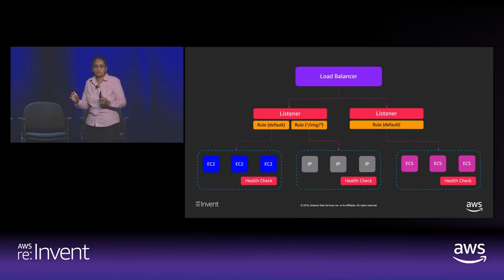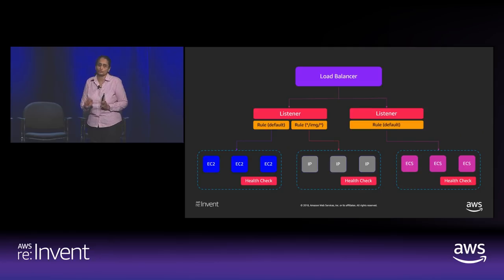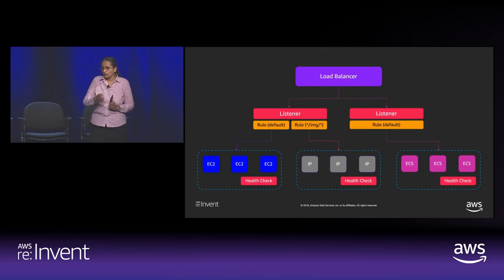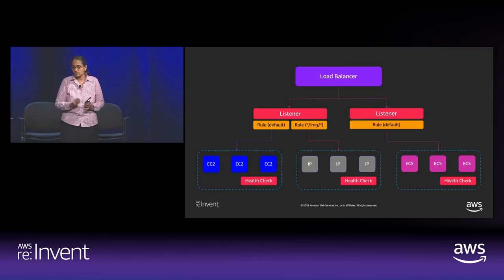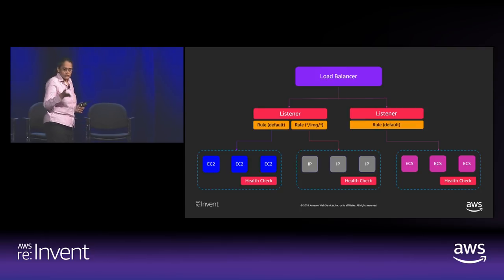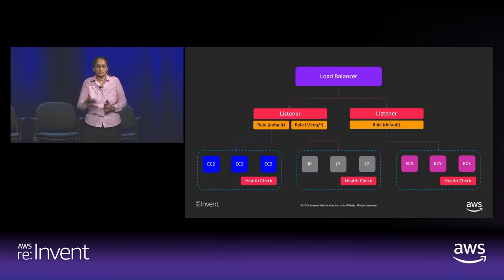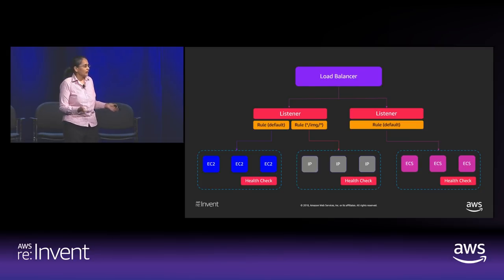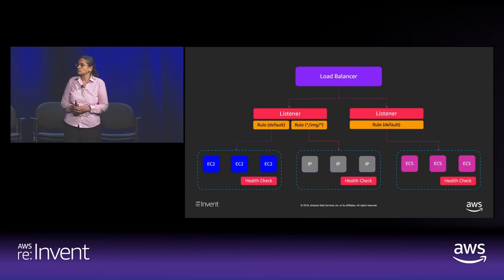We have listeners, target groups, and targets, plus rules that define how traffic flows to those targets. Rules are conditions and actions. We always have one default rule on the load balancer. For example, a path-based rule: if traffic matches a path like 'images,' forward it to the IP-based target group. You can have up to 100 rules per load balancer — again, a soft limit.